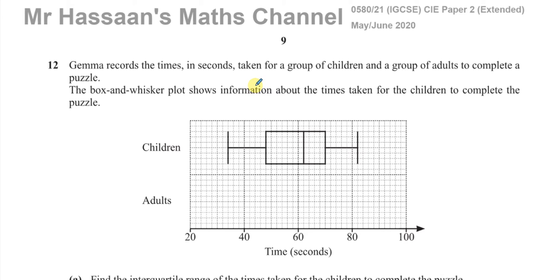It's about a box and whisker plot. It says, Gemma records the times in seconds taken for a group of children and a group of adults to complete a puzzle. The box and whisker plot shows information about the times taken for the children to complete the puzzle. So here we have the box and whisker plot. The box and whisker plot has five key pieces of information in it.